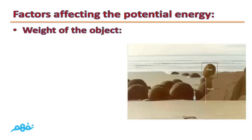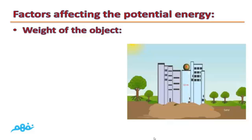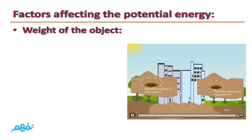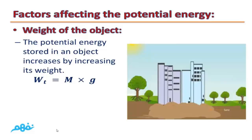If we have this stone, it has a mass, so it has weight, and it has a height from the ground. If we have two spheres — sphere A of a larger weight and sphere D of a smaller weight — and they have the same height and these spheres are left to fall down, we will see that the depression produced from metallic sphere A is larger than that produced from D. This means that potential energy increases as the weight of the object increases. So the potential energy stored in an object increases by increasing its weight.